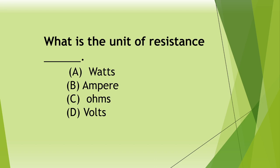What is the unit of resistance? A watts, B amperes, C ohms, D volts. Answer: C ohms.